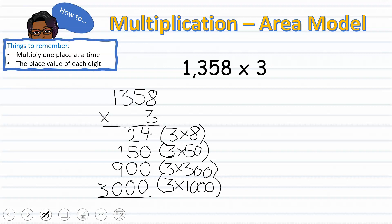Notice how all of the numbers are lined up according to place value. Ones, tens, hundreds, and thousands are lined up in their appropriate columns. The last step is to add up all of the partial products, and we end up with 4074.